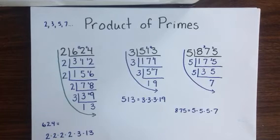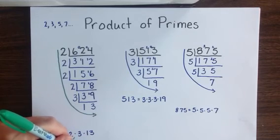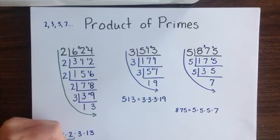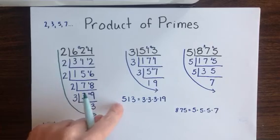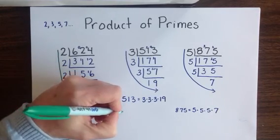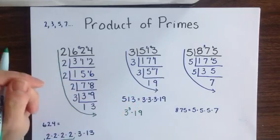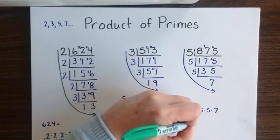One final note on the notation for these numbers: any time that you have a factor that repeats, you can also use exponential notation to show that number. In our first example, 624, we had four 2's — that can be written as 2 to the 4th power, since 2 to the 4th power means 2 × 2 × 2 × 2. The product of primes of 513 in exponential notation gives us 3 cubed times 19, or 3 to the 3rd power times 19. And 875 written in exponential notation would be 5 to the 3rd times 7.